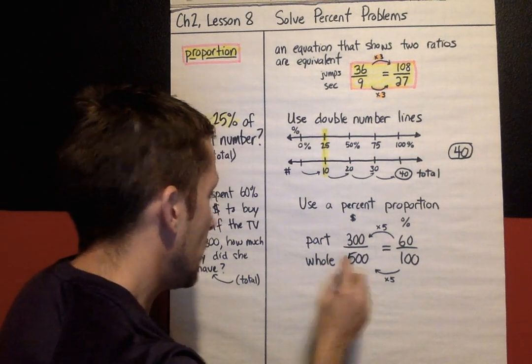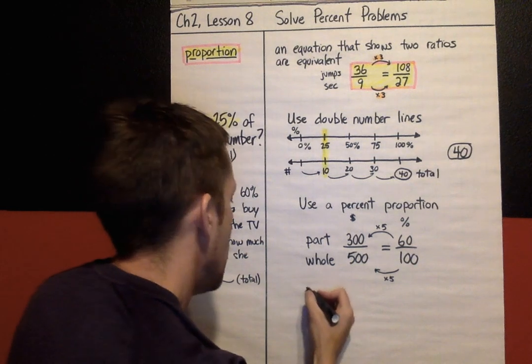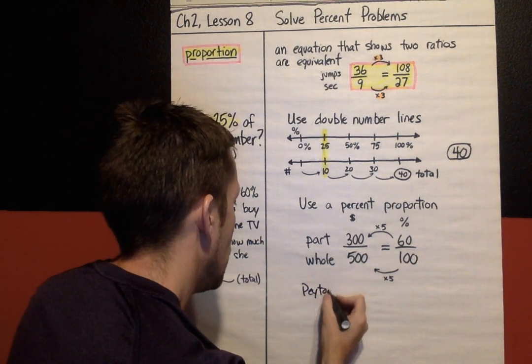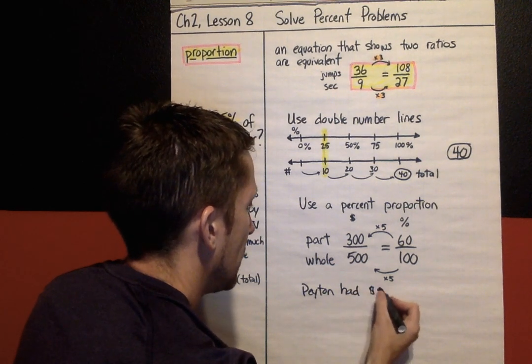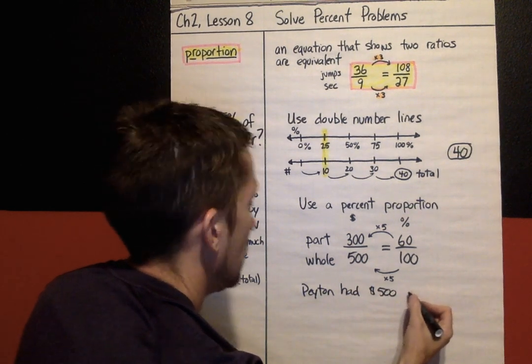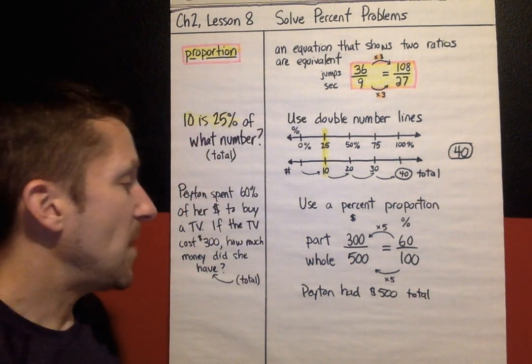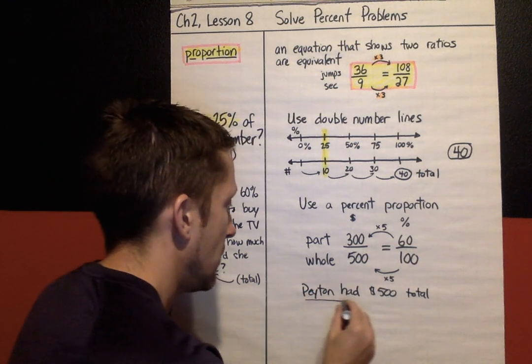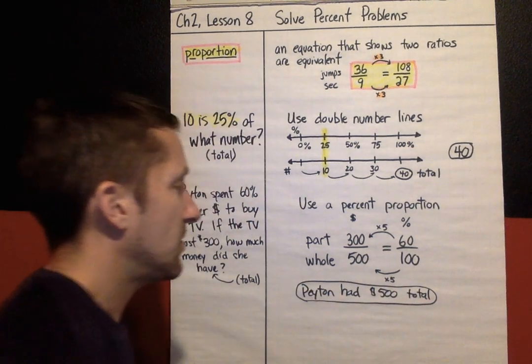So the total amount of money she started with would be Payton had $500 total. And she spent $300 of it on that TV, but that's the answer to our question.